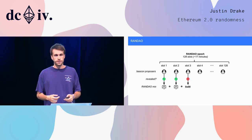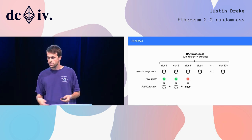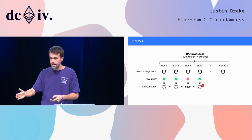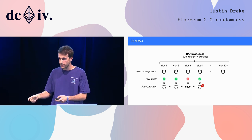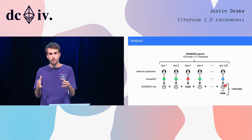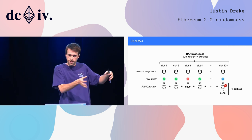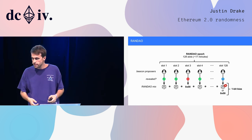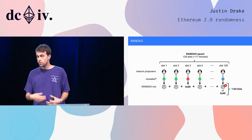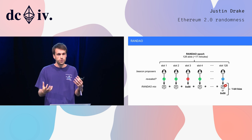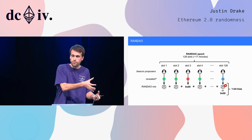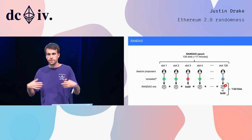It's okay if some proposers don't show up and don't reveal — we just move on. But once we want to use the randomness, for example at the very end of the epoch at slot 128, this is where the problems start. The last revealer already knows all the previous actions of the previous proposers, so they have a choice: they can either stay put and not reveal, or reveal their secret. They can effectively choose between two random numbers and will choose whichever is most favorable to them, opening the door to various attacks.